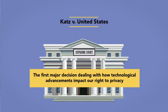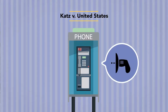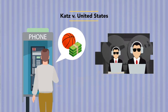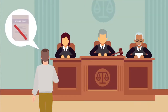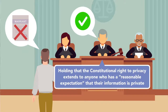The landmark Supreme Court case of Katz v. United States in 1967 was the first major decision dealing with how technological advancements impact our right to privacy. The case involved an electronic listening device secretly installed on a public payphone by the FBI. The surveillance technology recorded Katz making illegal gambling wagers by phone. The FBI didn't have a warrant for the device, so Katz challenged the evidence collected against him, claiming it was a violation of his Fourth Amendment rights. The Supreme Court agreed with Katz, holding that the constitutional right to privacy extends to anyone who has a reasonable expectation that their information is private.